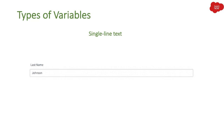Then we have Single Line Text, which is similar to a short description field. If you want a single line of text input — for example, first name or last name — you display it like this and use the Single Line Text variable.